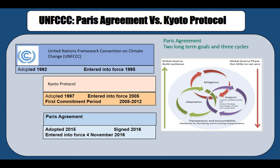Here we look at the UNFCCC — the United Nations Framework Convention on Climate Change — and two major agreements it produced: the Kyoto Protocol and the Paris Agreement. The Kyoto Protocol was adopted in 1997, entered into force in 2005, and its first commitment period ran from 2008 to 2012, after which it expired.